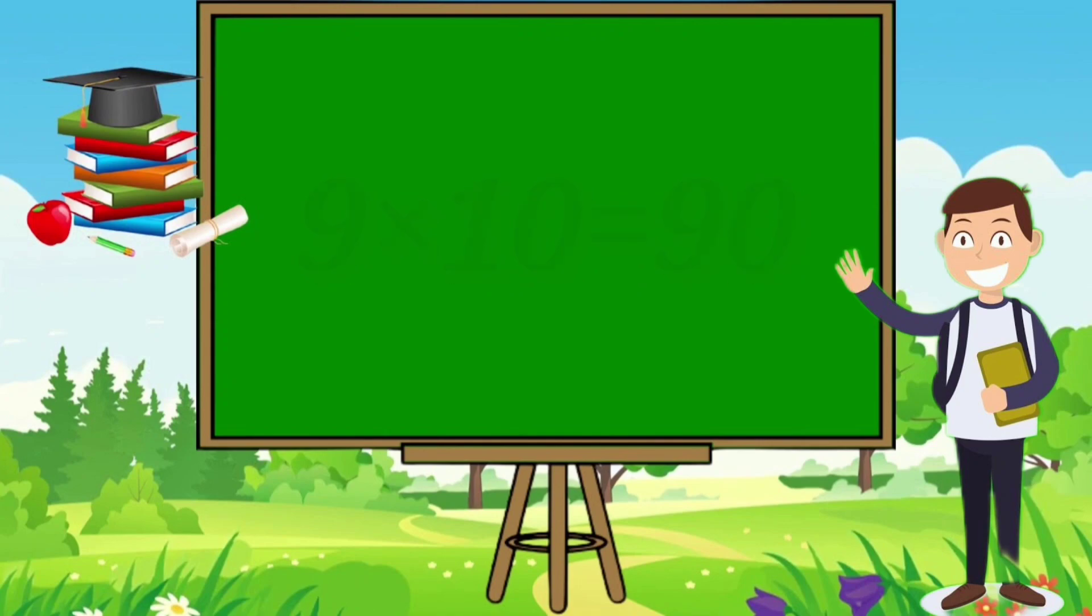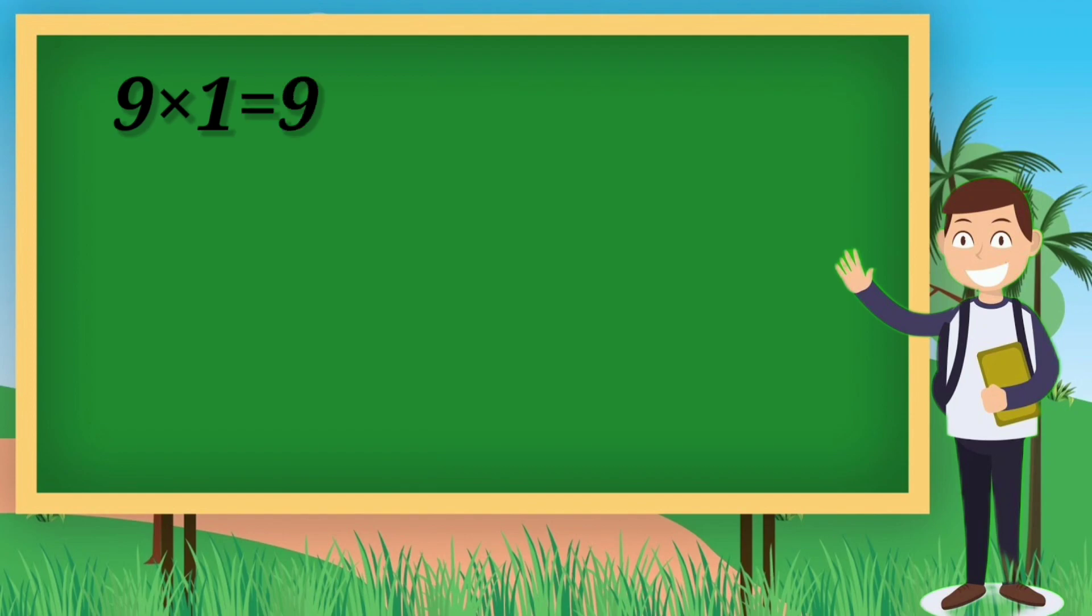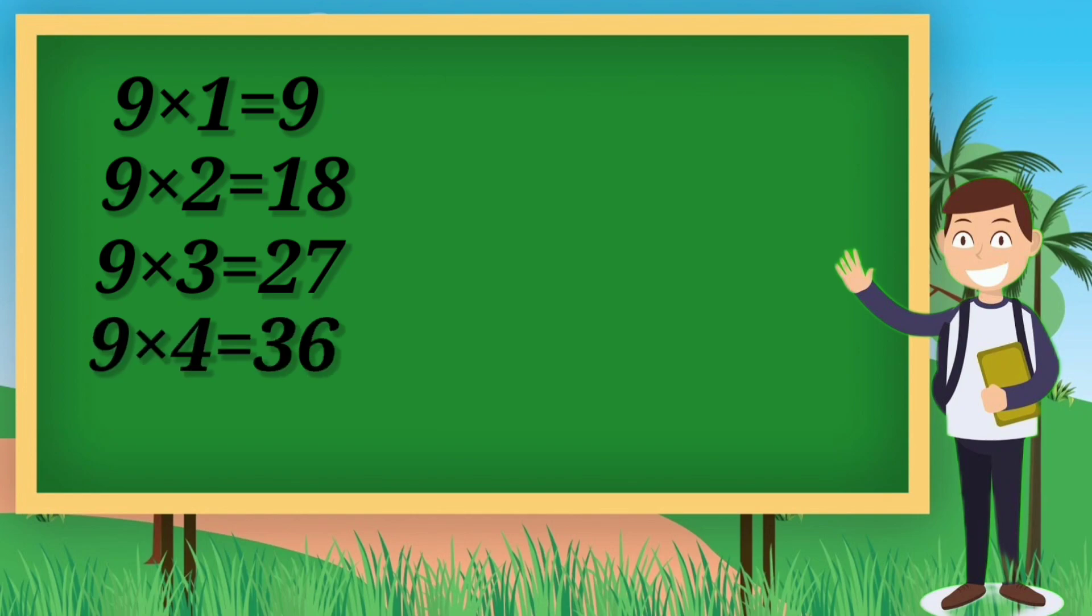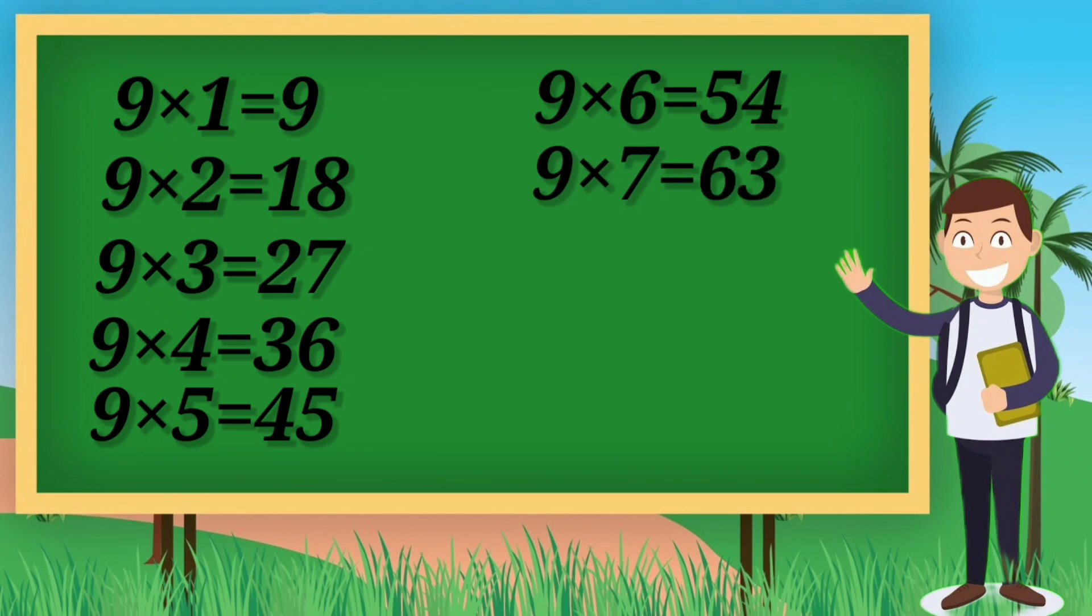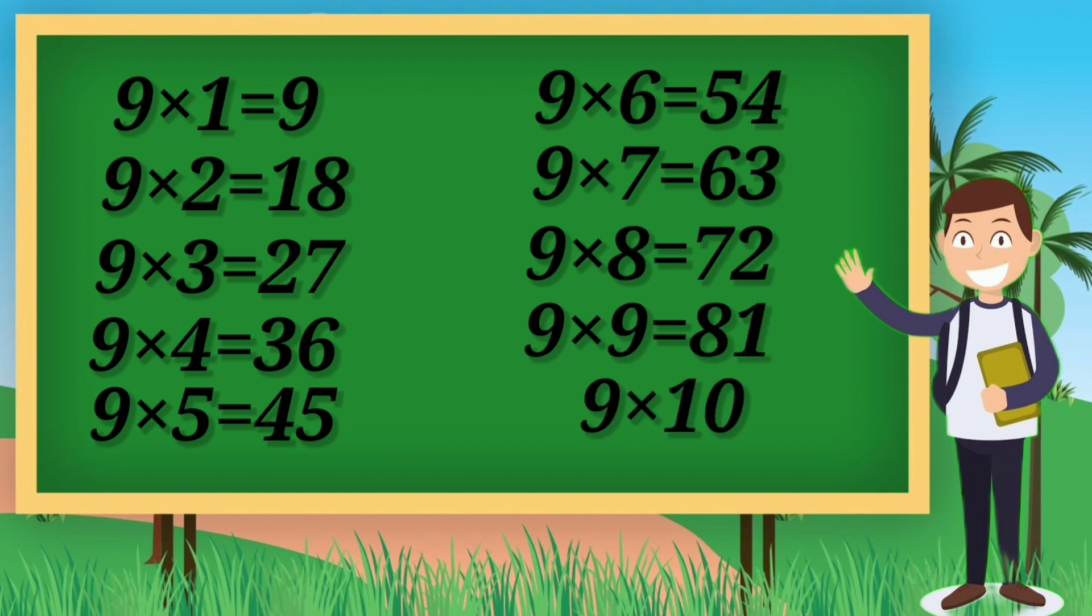9×10=90, 9×2=18, 9×4=36, 9×5=45, 9×6=54, 9×7=63, 9×8=72, 9×9=81, 9×10=90